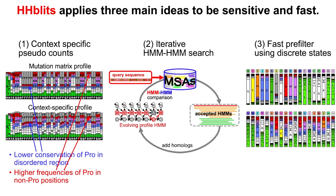The third idea for speed is that HHBlits has a fast pre-filter which discretizes profile columns, meaning you're searching strings against strings, but instead of an alphabet of size 20 for amino acids, you have an alphabet of size 219 discrete profile states.